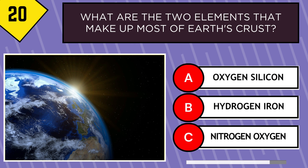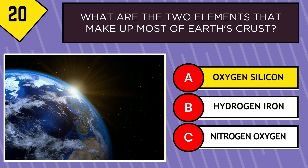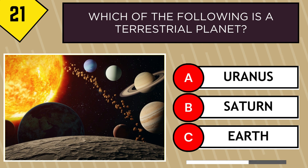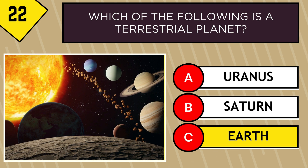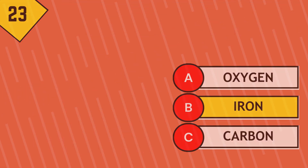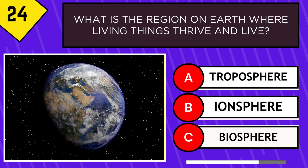What are the two elements that make up most of Earth's crust? Which of the following is a terrestrial planet? What is the most abundant element in the Earth's core? What is the region on Earth where living things thrive and live?